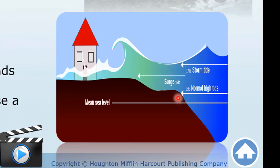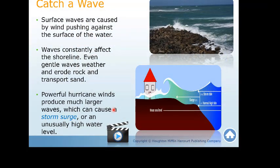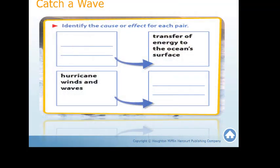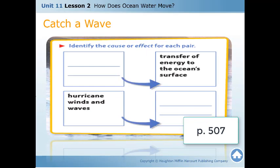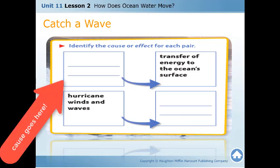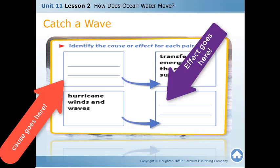Now fill out page 507 in the book and identify the cause and effect. Identify the cause in the first and third blocks, and in the fourth block explain the effect of hurricane winds and waves.